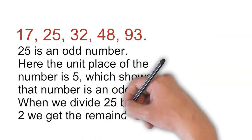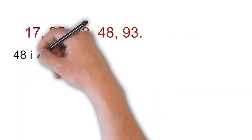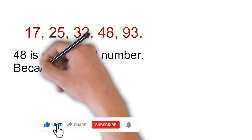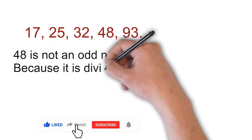When we divide 25 by 2, we get the remainder as 1. 48 is not an odd number because it is divisible by 2.